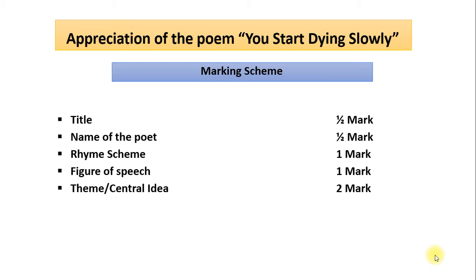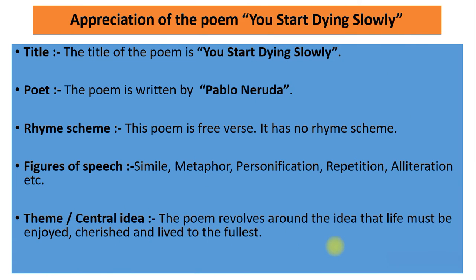The marking scheme of appreciation is: half mark for title, half mark for name of the poet, one mark for rhyme scheme, one mark for figure of speech, and two marks for theme or central idea. So let's see how to write the appreciation.